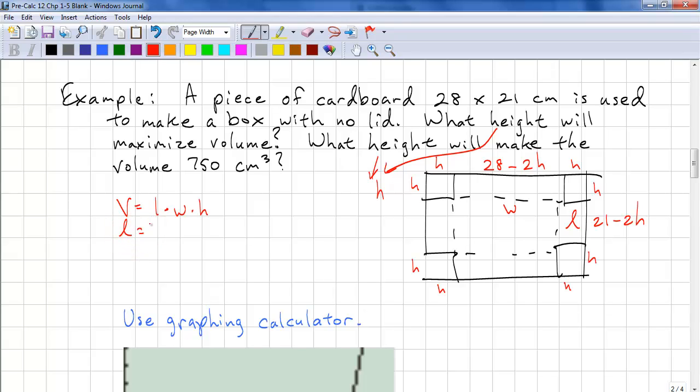And our length is 21 minus 2h. Our width is 28 minus 2h. And let's use one of our three main math tools, which is substitution. So we have (21 - 2h)(28 - 2h) times h.